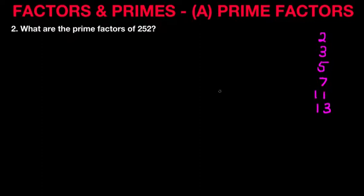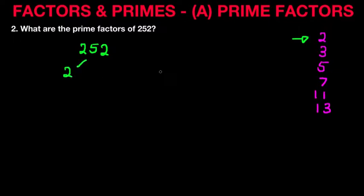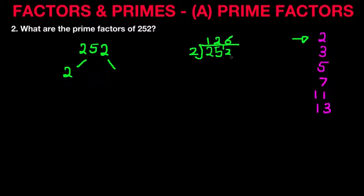So let's get back to the number 252 and chop this down using the factor tree. Is 252 divisible by 2? The answer is yes, because it is an even number. So we put 2 over here. 252 divided by 2: 2 into 2 is 1, 2 into 5 is 2 remainder 1, and we're left with 126. So we have got our first prime factor of the number 252.